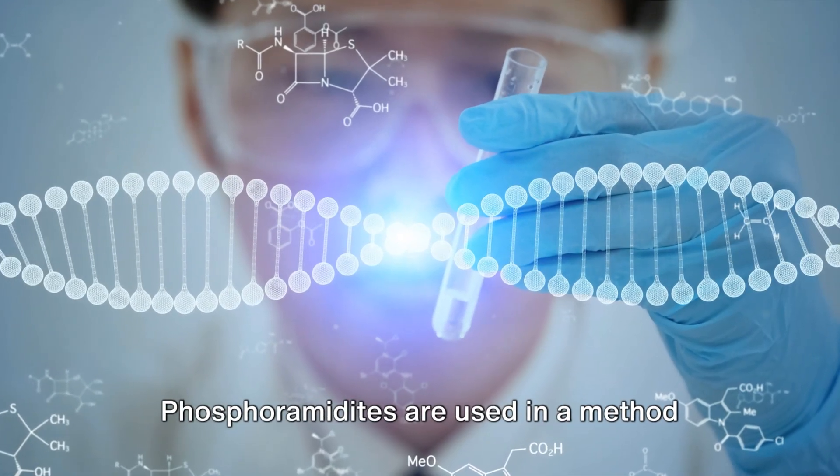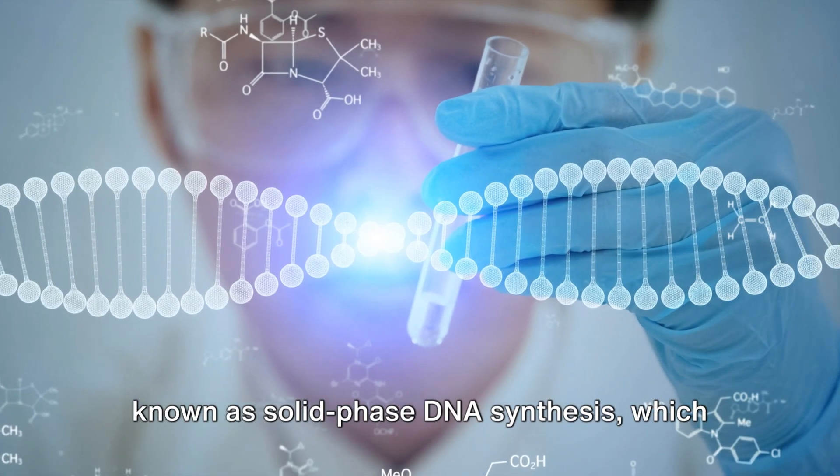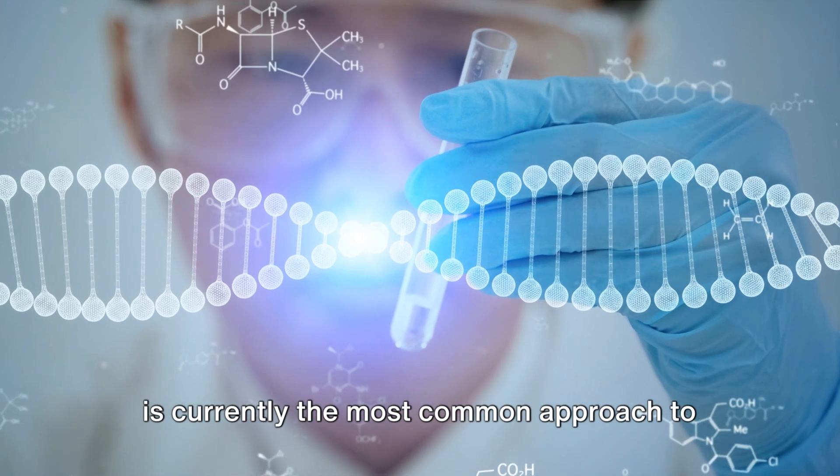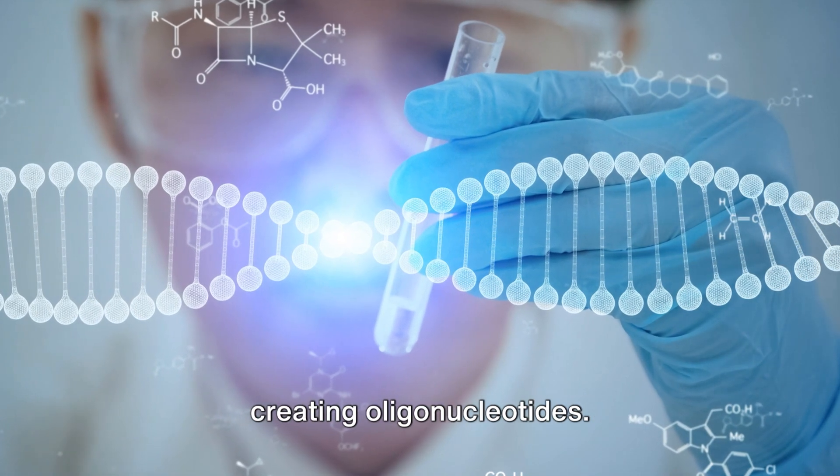Phosphoramidites are used in a method known as solid-phase DNA synthesis, which is currently the most common approach to creating oligonucleotides.